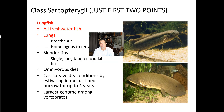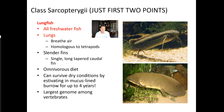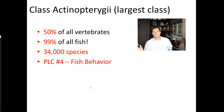The next group within Sarcopterygii is the lungfish. Since this is a marine biology course, I'll just note that these are freshwater fish with actual lungs — they gulp air at the surface. I mention them because they're relevant to the evolution of tetrapods. Since we'll skip over amphibians, understanding lungfish helps bridge that gap before we reach reptiles appearing in the ocean.